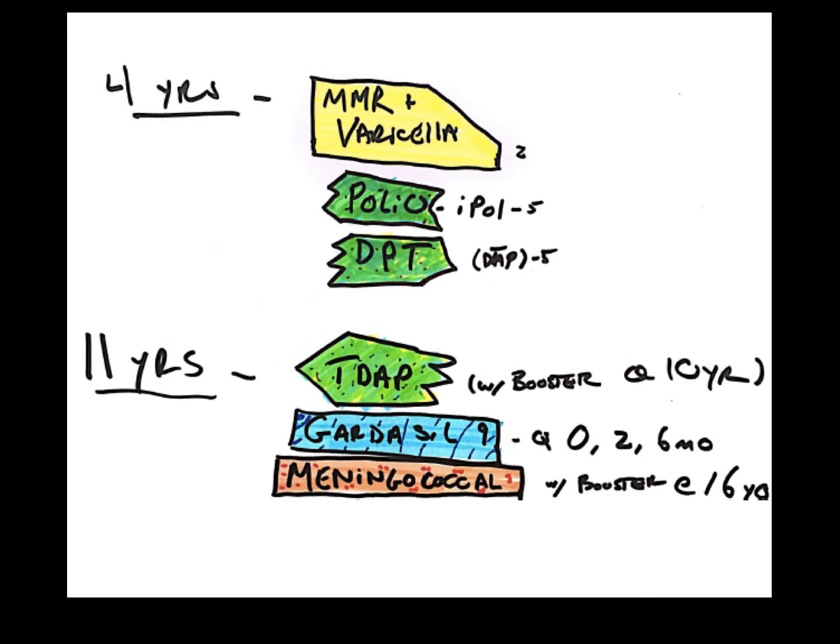We also want to start to consider the Gardasil series for HPV at 11 years. And then we'd repeat that at an interval of two and then six months. So it's a three-shot series, the Gardasil. There is some talk of making this a two-shot series now, but that's a discussion for another time.